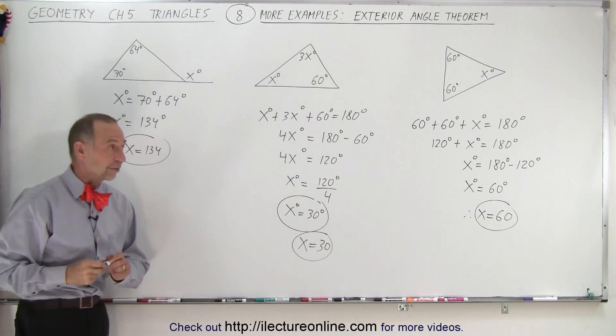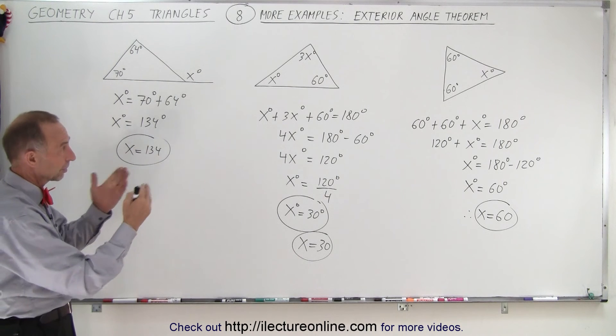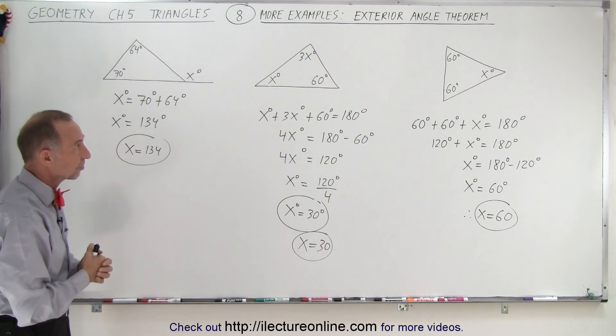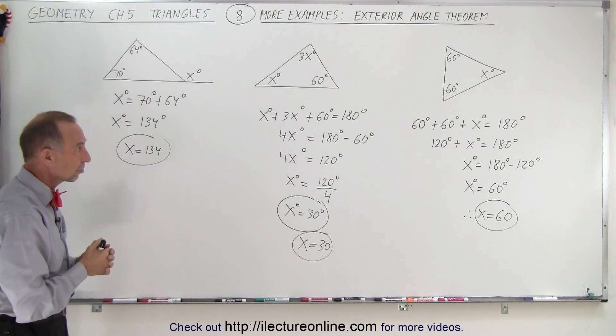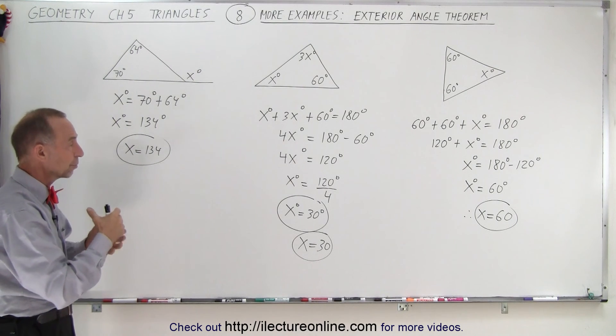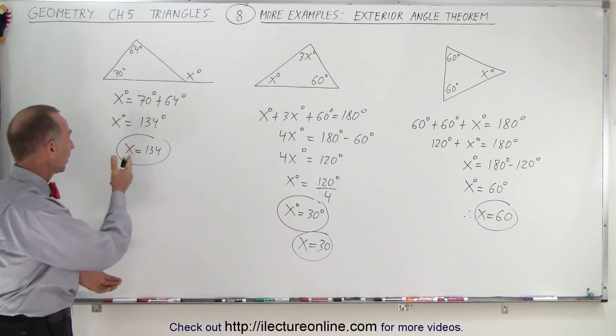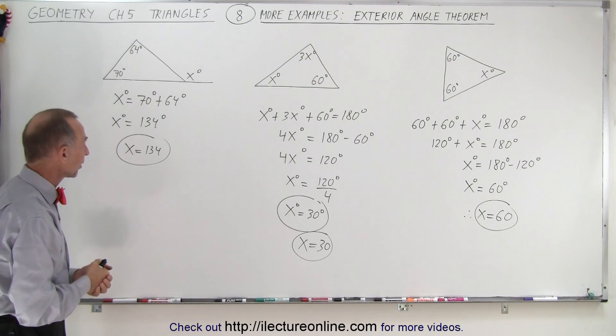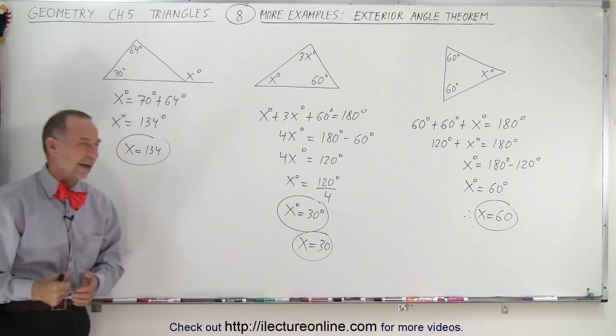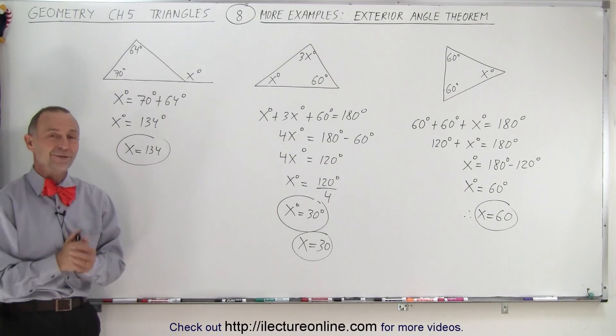That is how we find the value for x in each of the three cases. On the first two, we didn't have to use the exterior angle theorem. We could just use the postulate that the sum of all three angles must add up to 180 degrees. In this case, we have the handy theorem available to quickly find the value for the exterior angle. And that is how it's done.